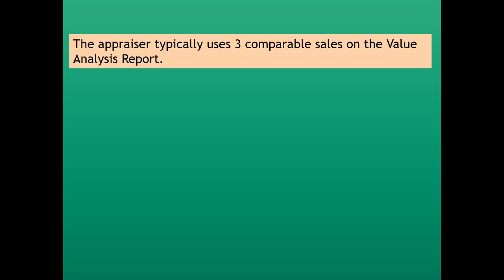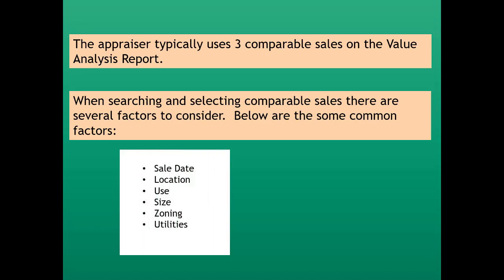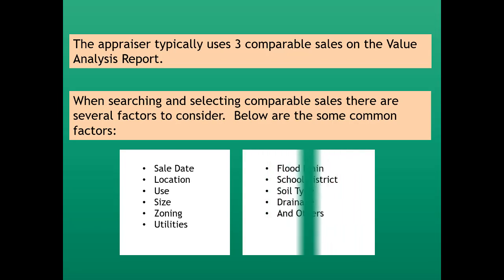The appraiser is required to use a sufficient number of sales as a basis of value, and typically uses three comparable sales on the value analysis report. When searching and selecting comparable sales, there are several factors to consider. Common factors include sale date, location, use, size, zoning, and utilities.